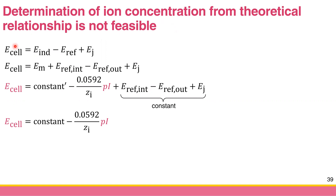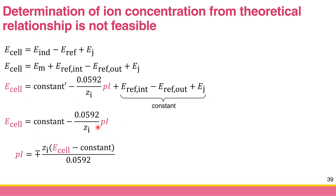For example, you can measure E_cell. E_cell is equal to E_indicator minus E_reference plus junction potential. The E_indicator is E_membrane plus the internal reference minus the outer reference, which is our reference, plus E_junction. Every term we assume is constant, so we combine them. At the end, we assume the membrane electrical potential gives E_cell equal to constant minus 0.0592 over charge, multiplied by the p_ion.